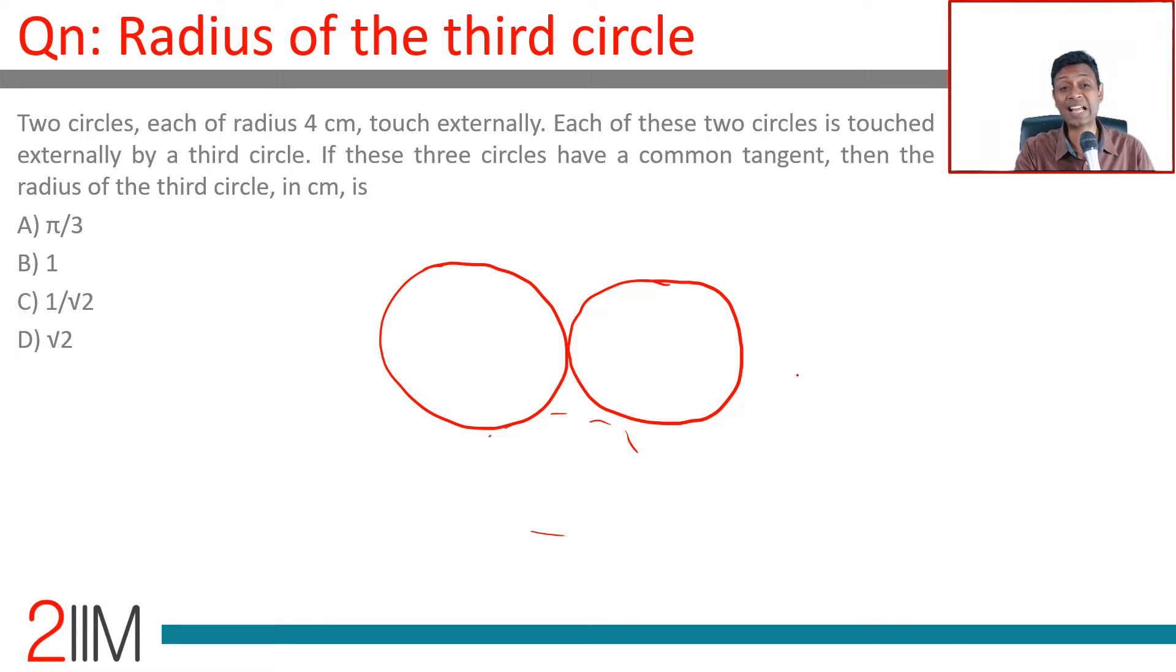If these three circles have a common tangent, then find the radius of the third circle. The third circle has to be here, with a common tangent to these two - either this, or this, or the tangent in between.